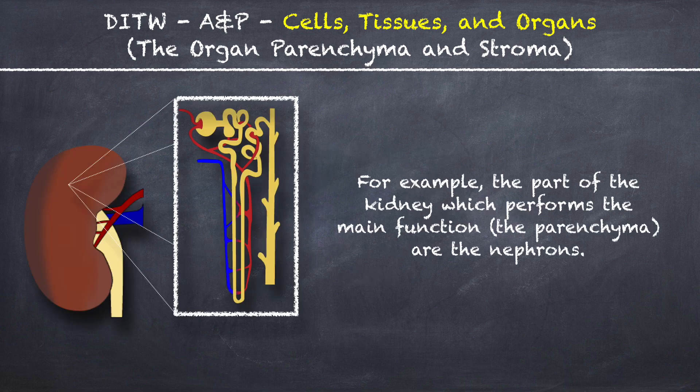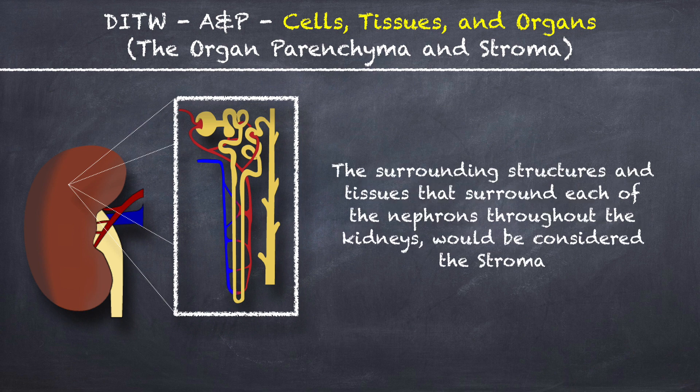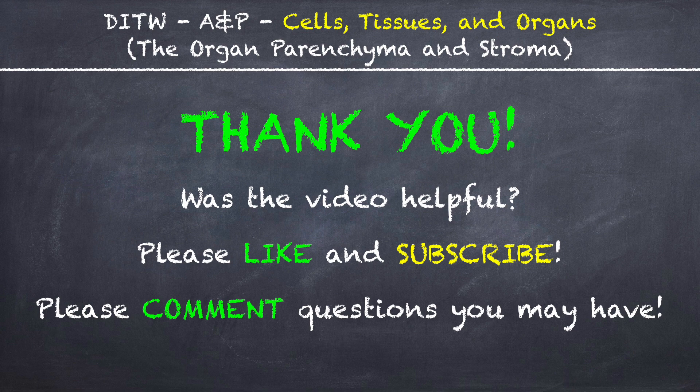For example, the part of the kidney which performs the main function — the parenchyma — are the nephrons. The surrounding structures and tissues that surround each of the nephrons throughout the kidneys would be considered the stroma.